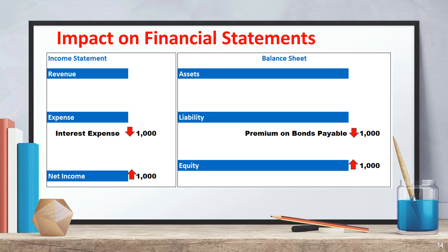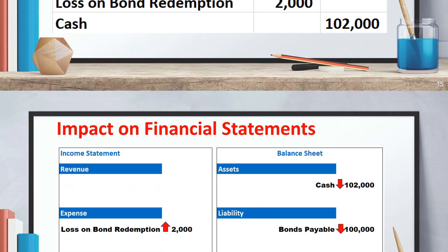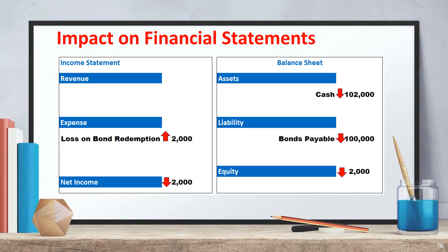Finally, let's cover bond redemption before maturity — this occurs when a company repays the bond principal early. Example: Company XYZ redeems $100,000 bonds at 102 (102% of face value). Journal entry: debit bonds payable $100,000, debit loss on bond redemption $2,000, credit cash $102,000. Redeeming bonds at a premium creates a loss which reduces net income. On the income statement, loss on bond redemption increases by $2,000, reducing net income by $2,000. On the balance sheet, cash decreases by $102,000, bonds payable decreases by $100,000, and equity decreases by $2,000.